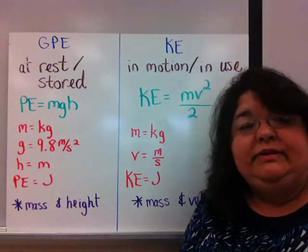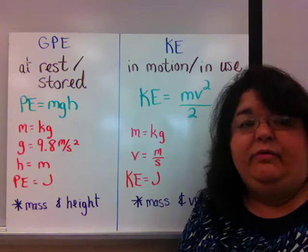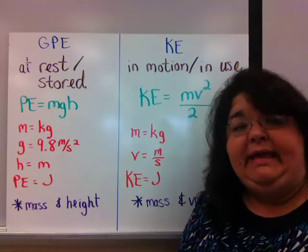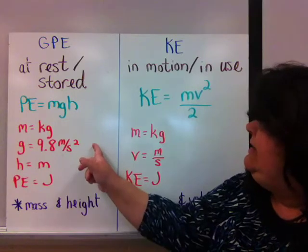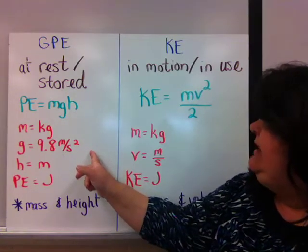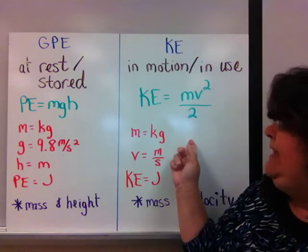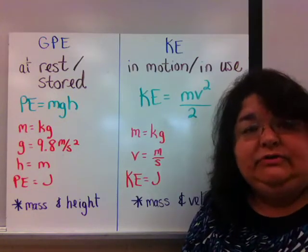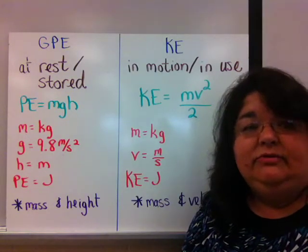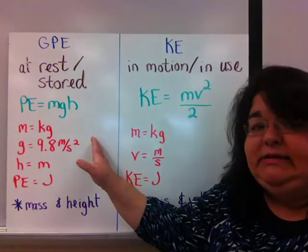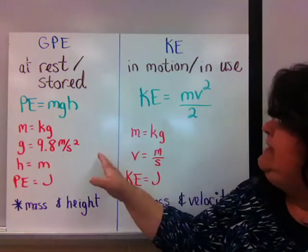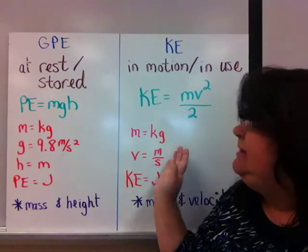The forms of energy that we talked about, the five forms, can all be in one or two states. They can either be in potential energy state, or they can be in the kinetic energy state. A form of energy is how that energy is used or stored. Whether it is being stored or used is determined by its state.